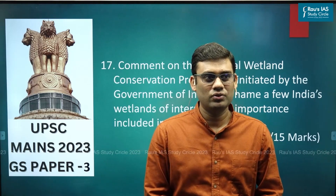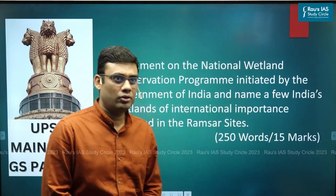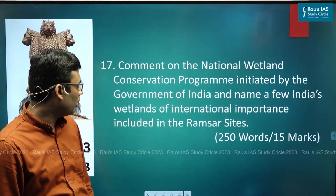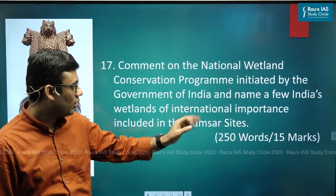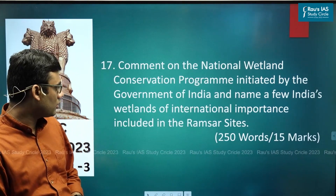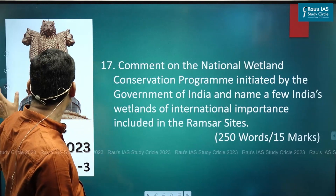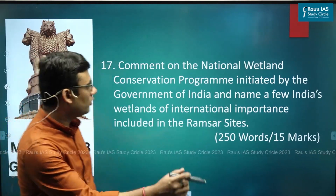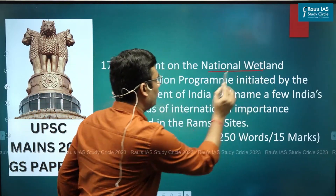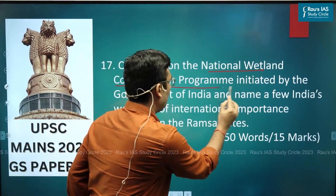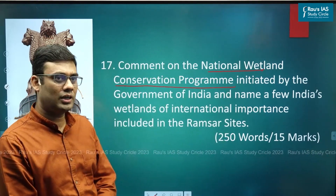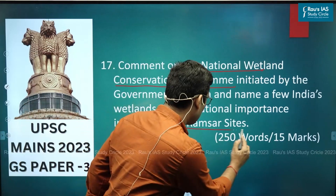This is question number 17 of GS Paper 3. The question reads: comment on the National Wetland Conservation Program initiated by the Government of India, and name a few of India's wetlands of international importance included in the Ramsar sites. The question has two parts: the first deals with the National Wetland Conservation Program, and the second is about Ramsar sites in India.